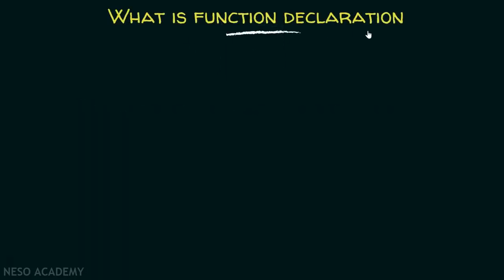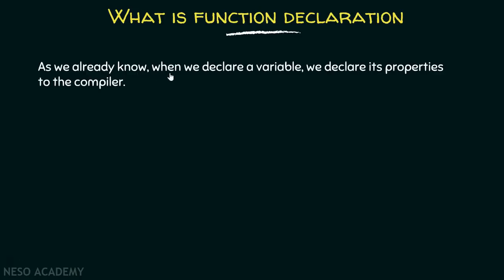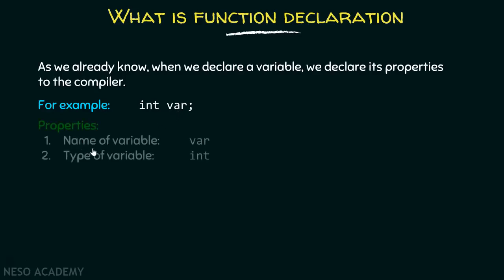What is function declaration? As we already know, when we declare a variable, we declare its properties to the compiler. For example, this is the way we declare a variable, and the properties of this variable 'var' are: the name of the variable is 'var' and the type of the variable is int, that is integer.